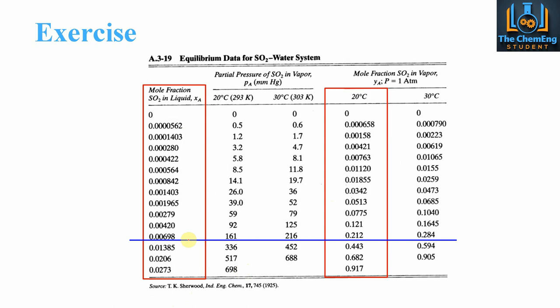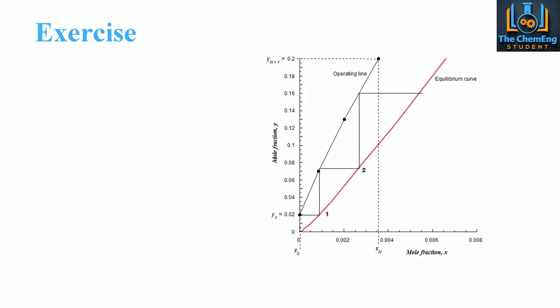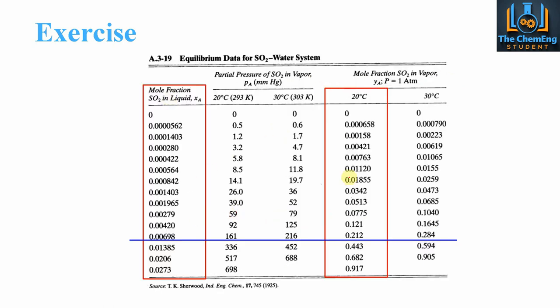And then what we can then do, so there's our equilibrium data for SO2 water system. We can plot values up to 0.2. And then when we plot this, we will have our equilibrium curve, which is here. That's from this data. So we plot this against this. That's our equilibrium curve.